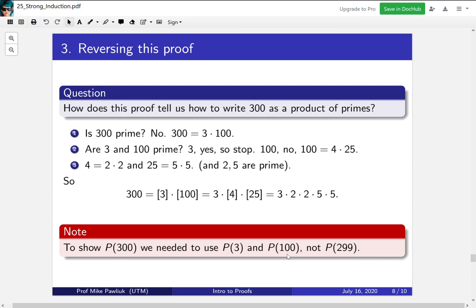Another thing to note is that just because you remember 299 doesn't tell you that you know how to do 300. You need to remember all the things along the way. This is the idea of using memory, so we have to remember P(3) and P(100) when we want to do P(300). In simple induction we only have to remember one step before.